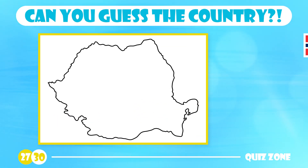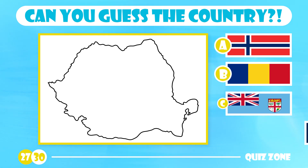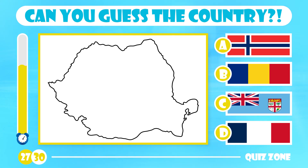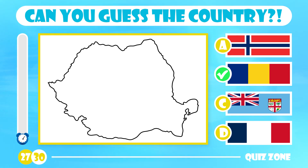Which country is this? Norway, Romania, Fiji or France? The answer is Romania. In South Eastern Europe, Romania is the seventh most populous country in the European Union.